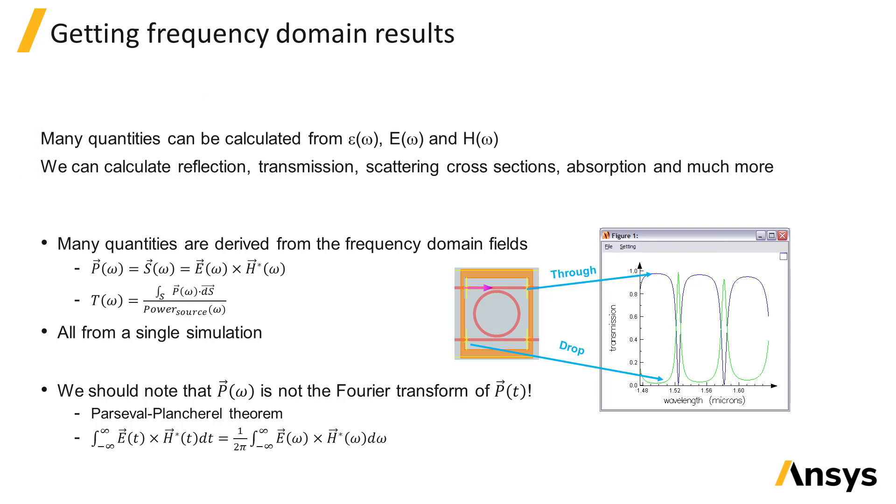For example, the Poynting vector, often called P or S, can be calculated with E cross-conjugate of H. This allows us to calculate the power crossing a given surface which we typically normalize to the power of the source to obtain a quantity between minus 1 and 1. This allows us to plot, in our ring resonator example, the normalized transmission through the through and drop ports by calculating hundreds of wavelength points in a single simulation.